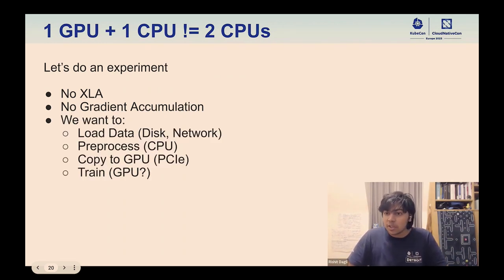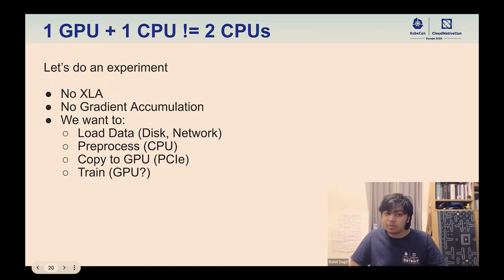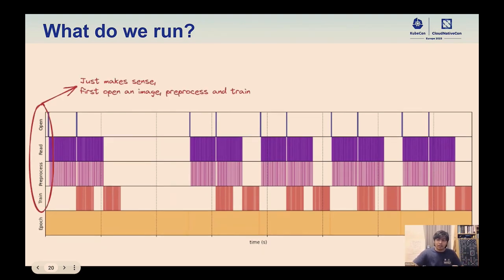We want to train a machine learning model — ResNet-50, one of the most popular models — on ImageNet. The steps are: load the data, preprocess the data (a CPU bottleneck), copy tensors to the GPU (a PCIe bottleneck), and then train using the GPU. This is our current sequential way of running it: open an image, preprocess the image, then train on the image. This kind of profiling looks straightforward.